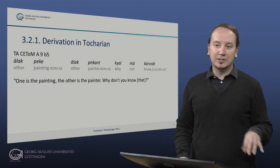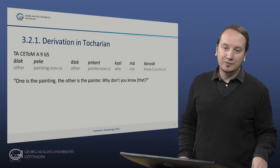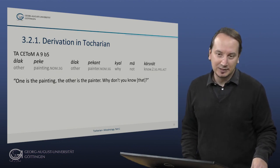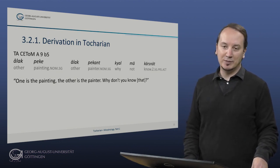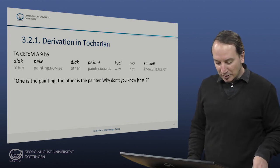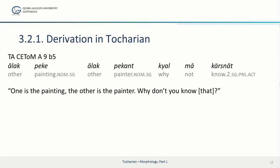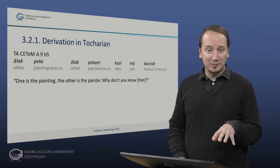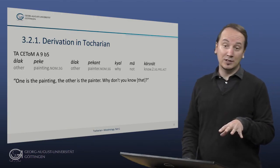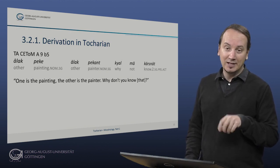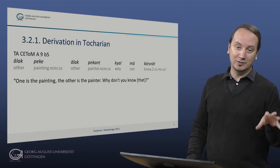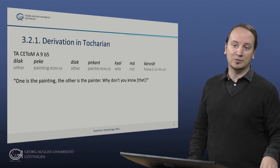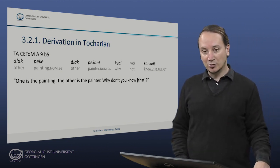The first example is from Tocharian A, from the famous story about the mechanical doll: 'alakpeke, alakpekkant, kjalma kursnat' — 'one thing is the painting, the other is the painter — why don't you know that?' What is nice about this passage is that we have both an action noun, 'peke' meaning painting, and an agent noun, 'pekant' meaning painter, both connected with the verbal root 'pik' meaning to paint.